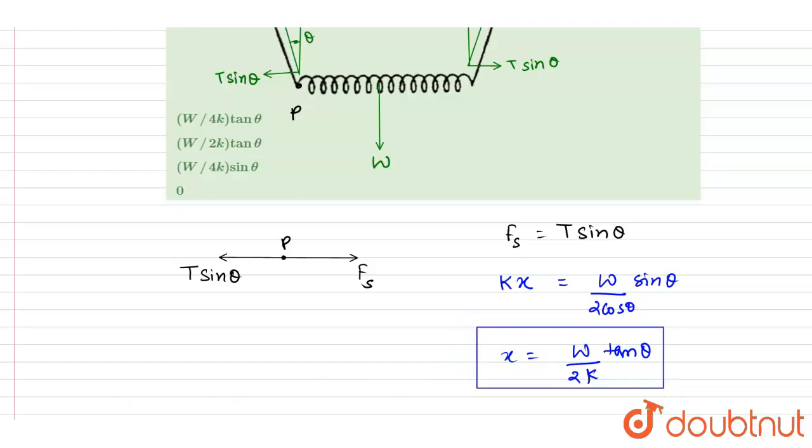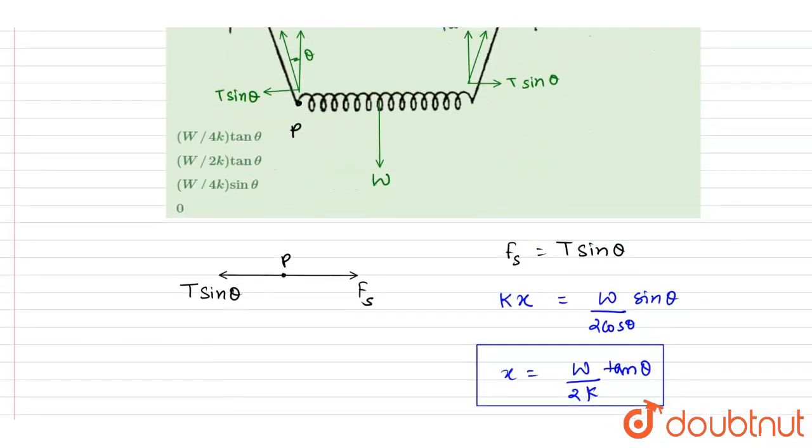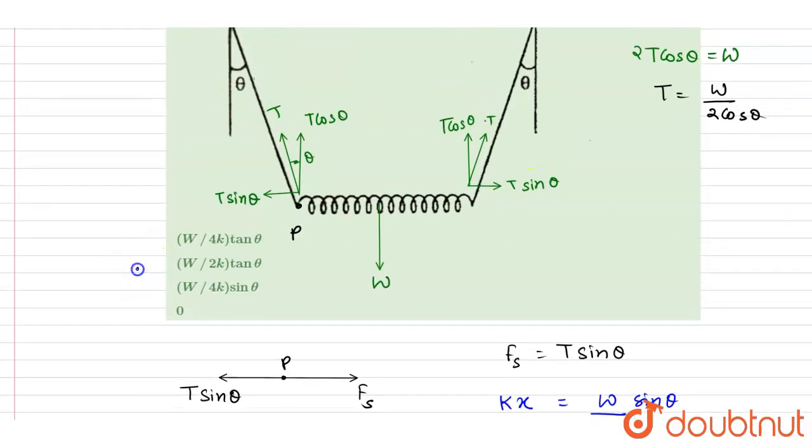And this is the extension in the spring and answer of this question. Now you can check for the option, W by 2k tan theta, so B is the correct one. Thank you.